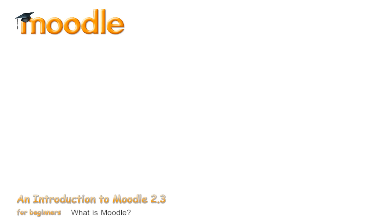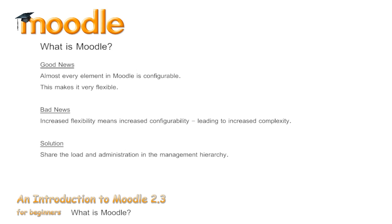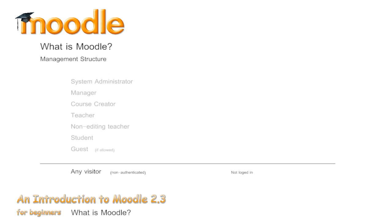A phrase that will be repeated many times in this course will involve Moodle's flexibility. Part of the success of Moodle is its configurability — it has been successfully installed in small primary schools right through to the Open University. In this section we will examine the structure of the management behind Moodle. There are seven default levels of management, and these can be increased should you require, but most sites will amalgamate these into fewer levels to suit the individual requirements of your application.